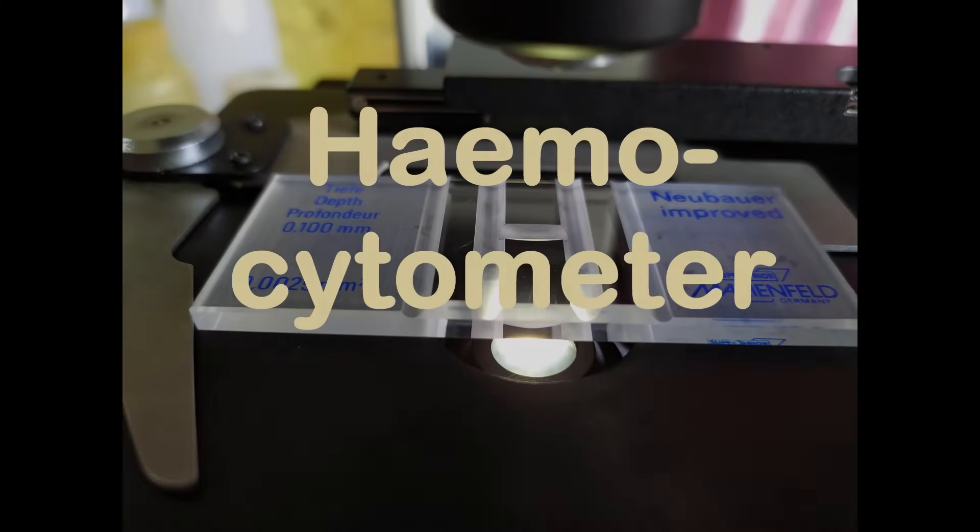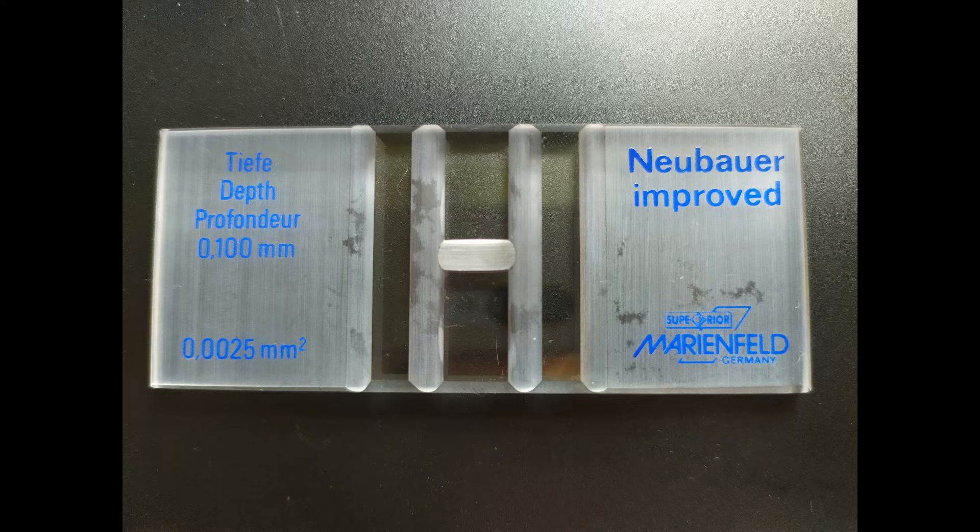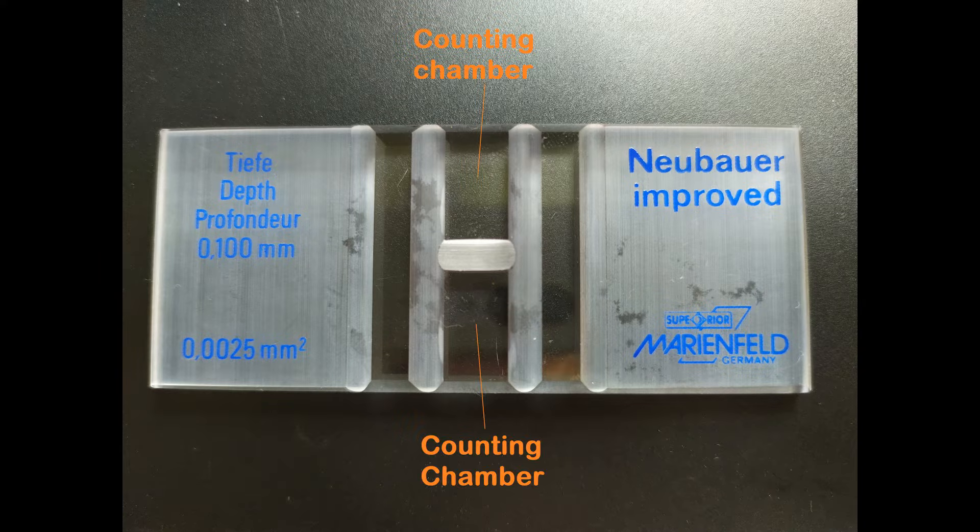The hemocytometer is a versatile instrument used for quantitative estimation of cell population in a sample of cell suspension. It consists of a thick piece of glass slide, the center of which contains two counting chambers separated by a groove.